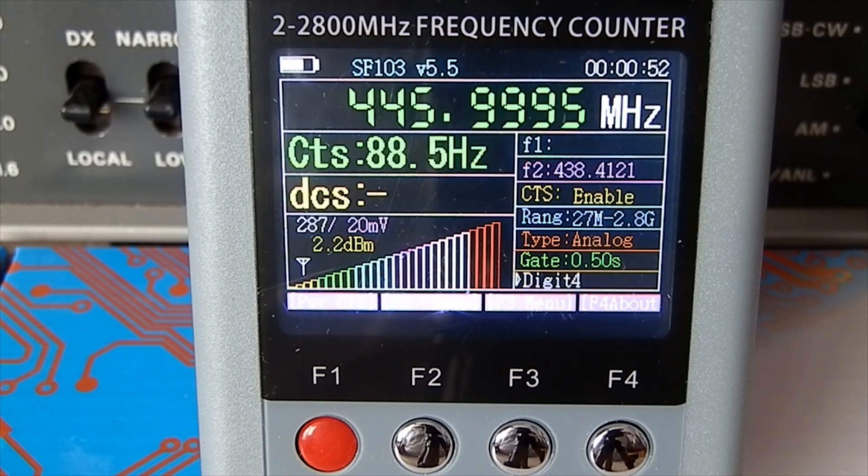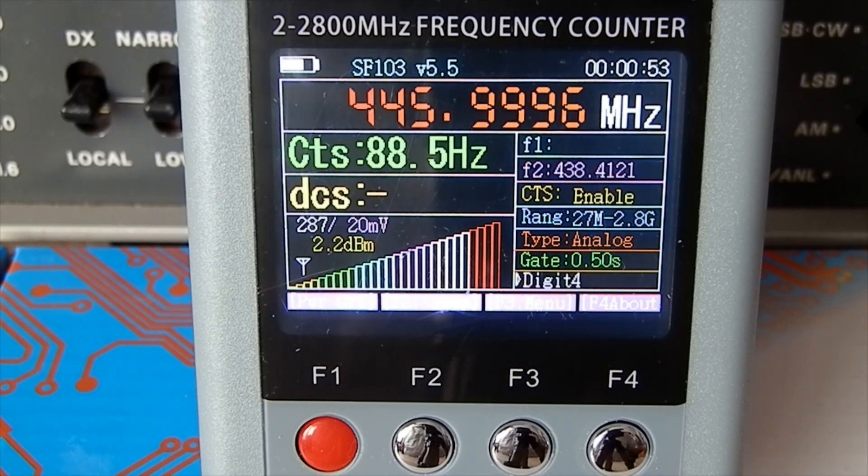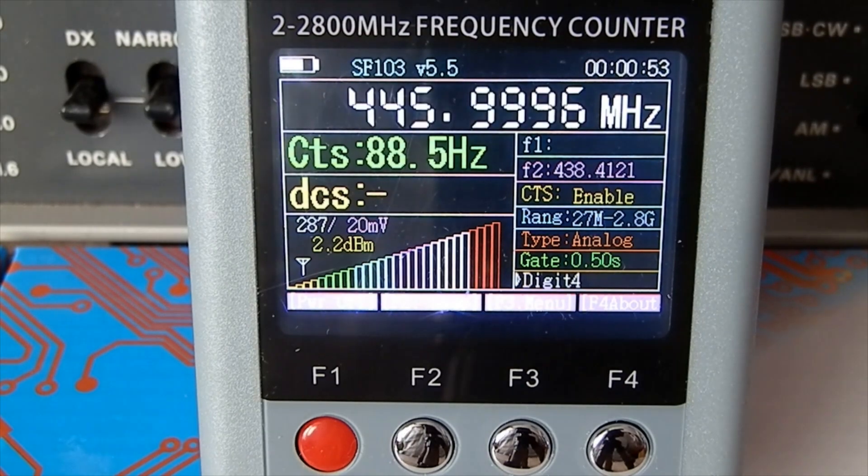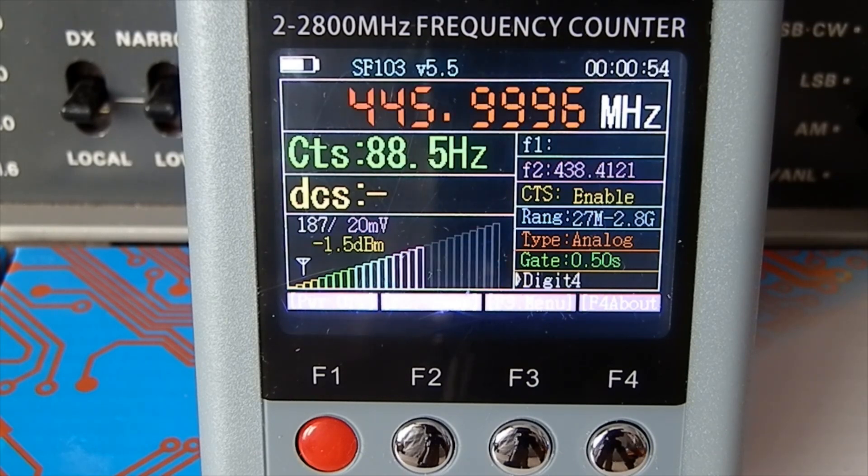There we are, 445. Now that's 446.00000, so that's 445.99999, anyway. There we are again, CTCSS 88.5, and the signal strength at the bottom there. If I move that down there, signal strength lowers a little bit.